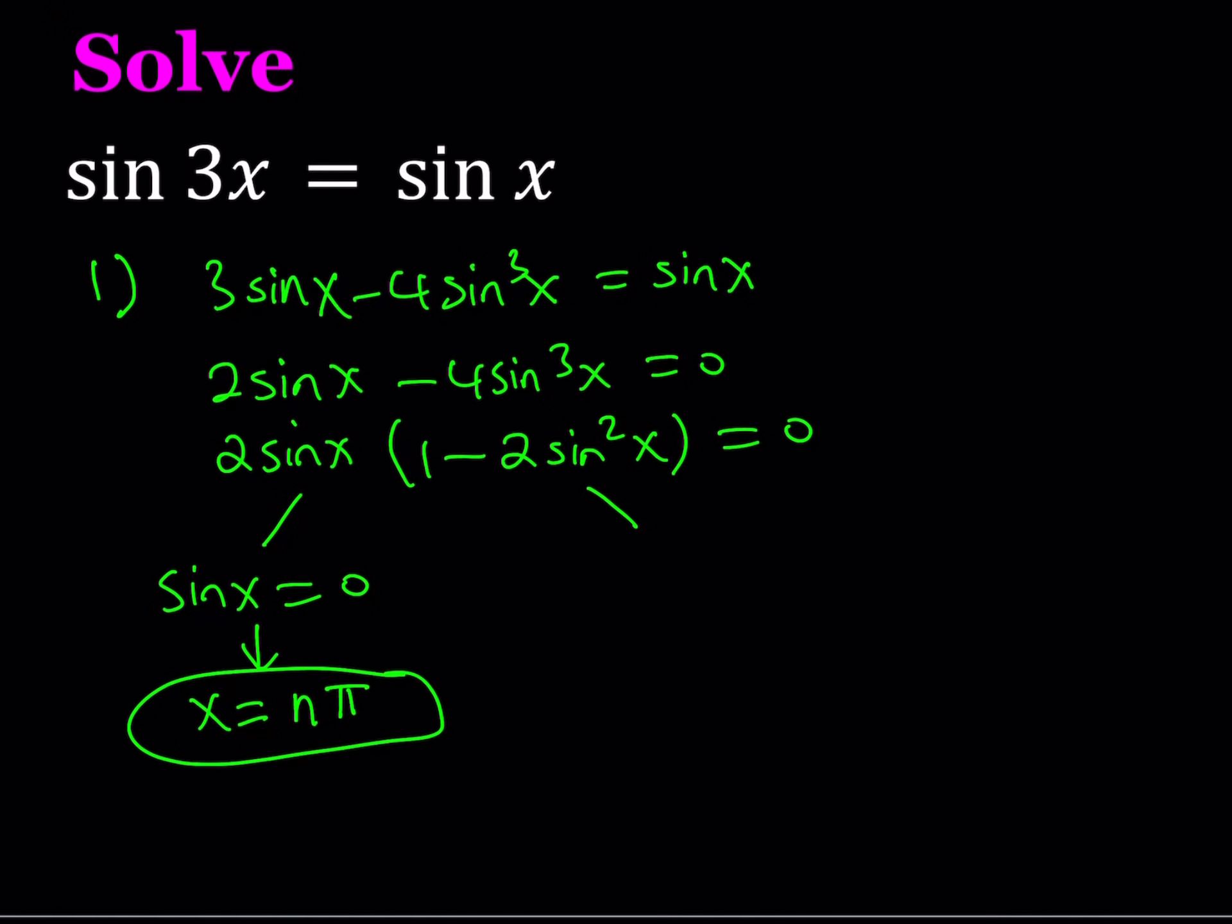And from here we actually get two solutions, but let's write it this way first. Sine squared x is equal to 1 half. This means that sine x can be square root of 1 half, which is 1 over root 2, or you can write it as root 2 over 2, or the opposite.